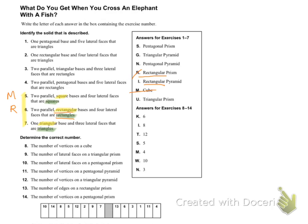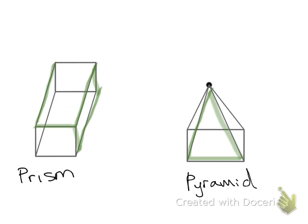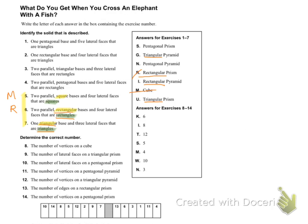Our last question, number seven — it says triangular. So we have a couple of different options: a triangular prism or a triangular pyramid. But it says that the lateral faces are triangles. The ones that are triangles are pyramids, so we're going to go with a triangular pyramid, which is letter G. Then you're going to plug those down into the riddle below. And that is it for questions five, six, and seven. If you have any questions, make sure to email me.